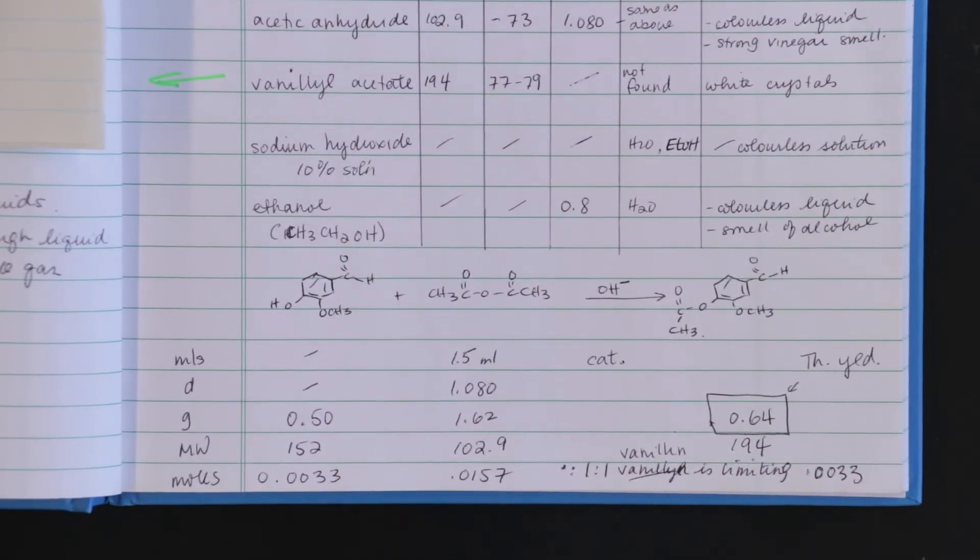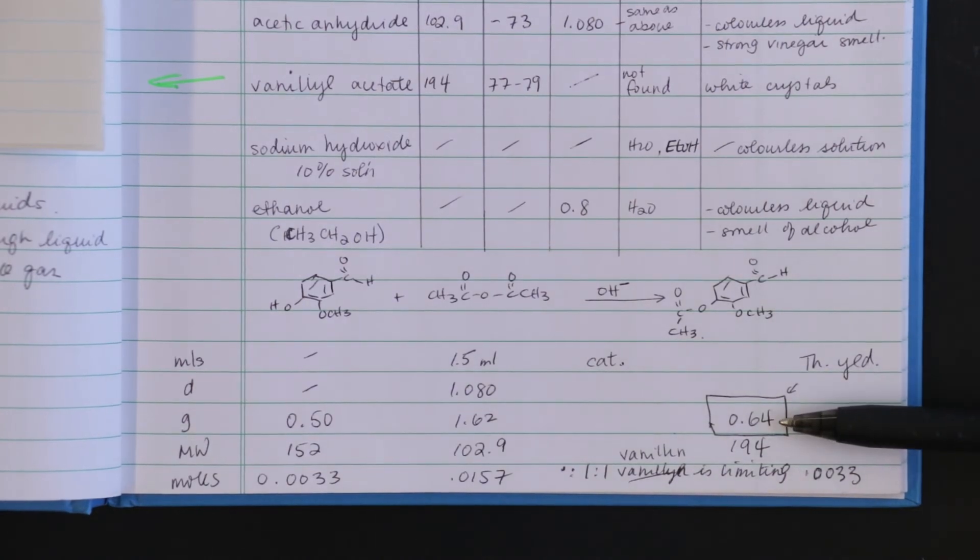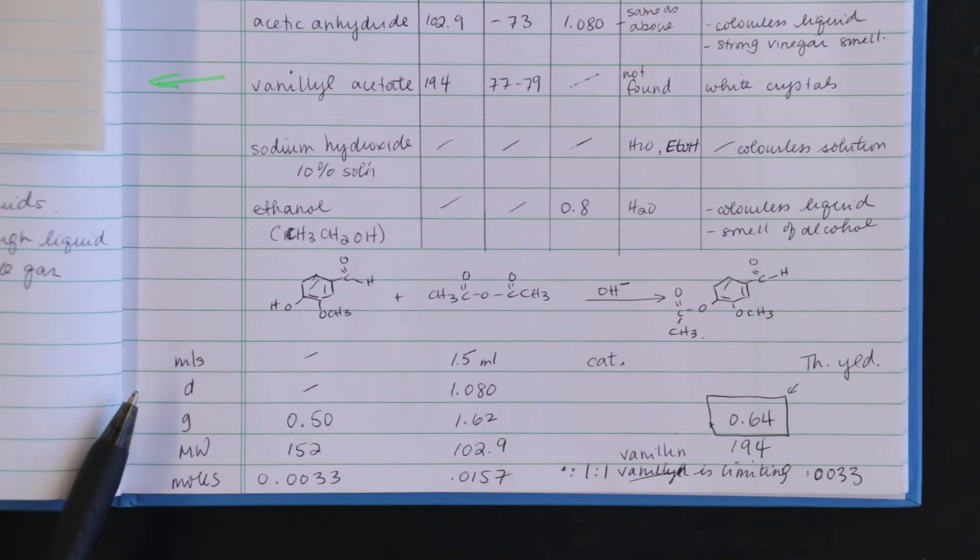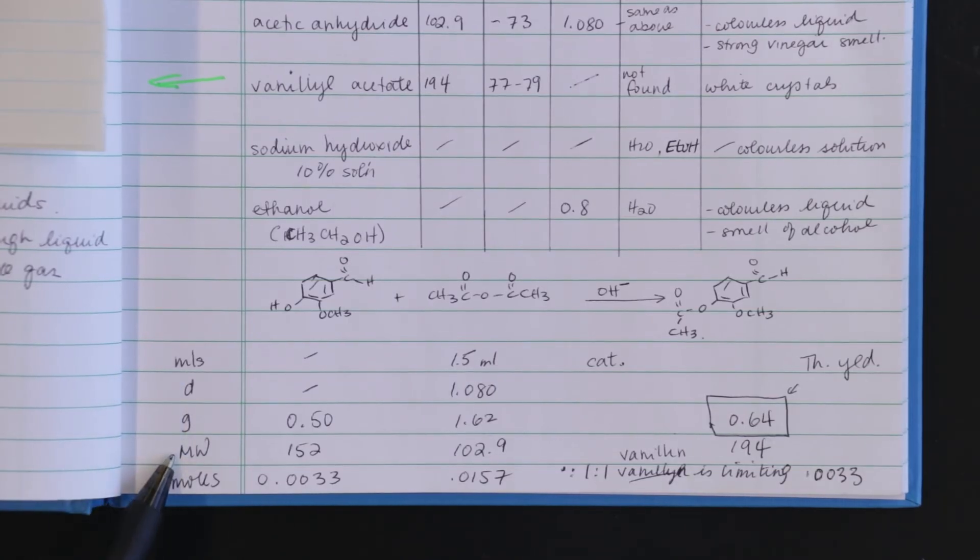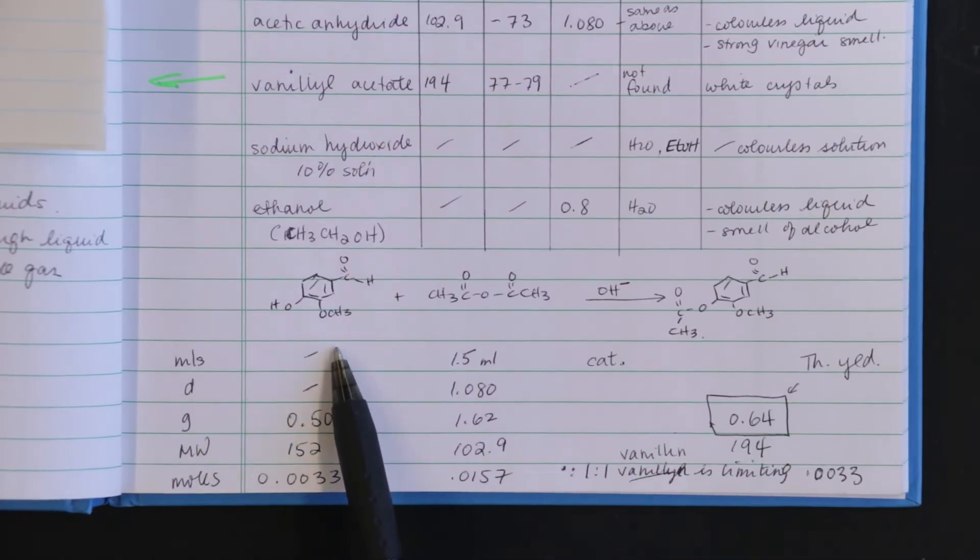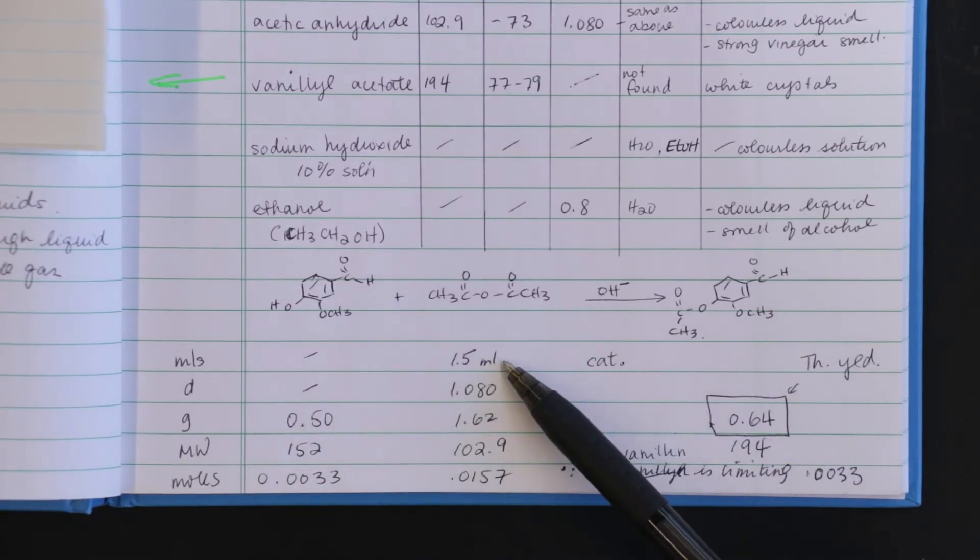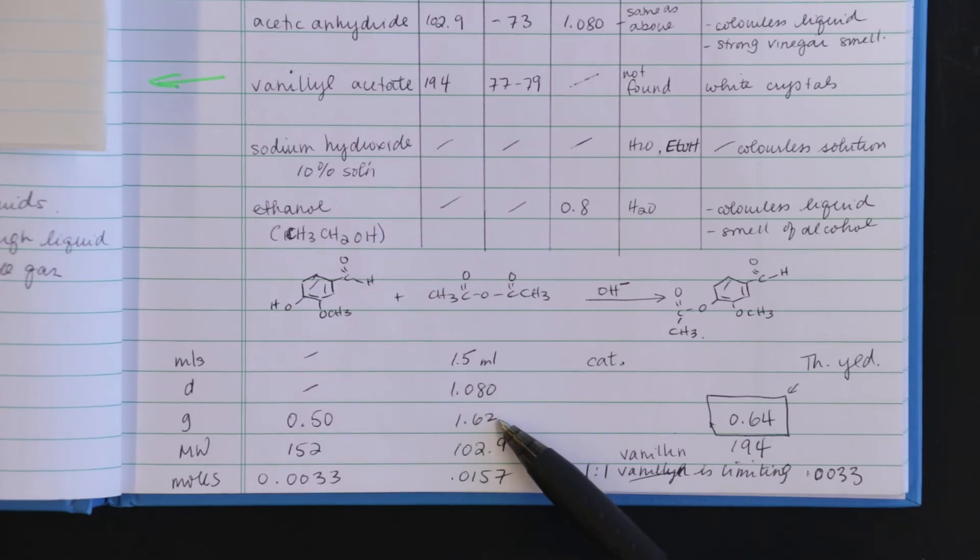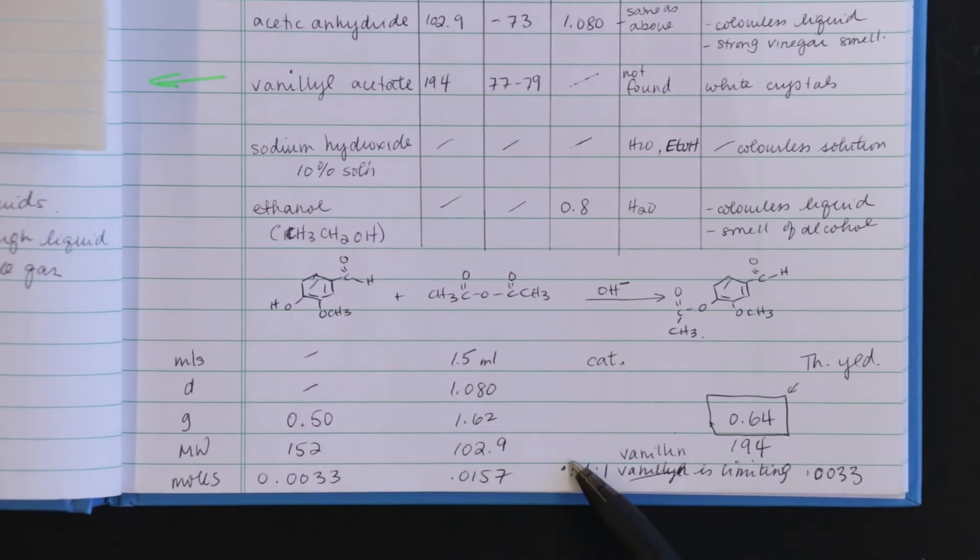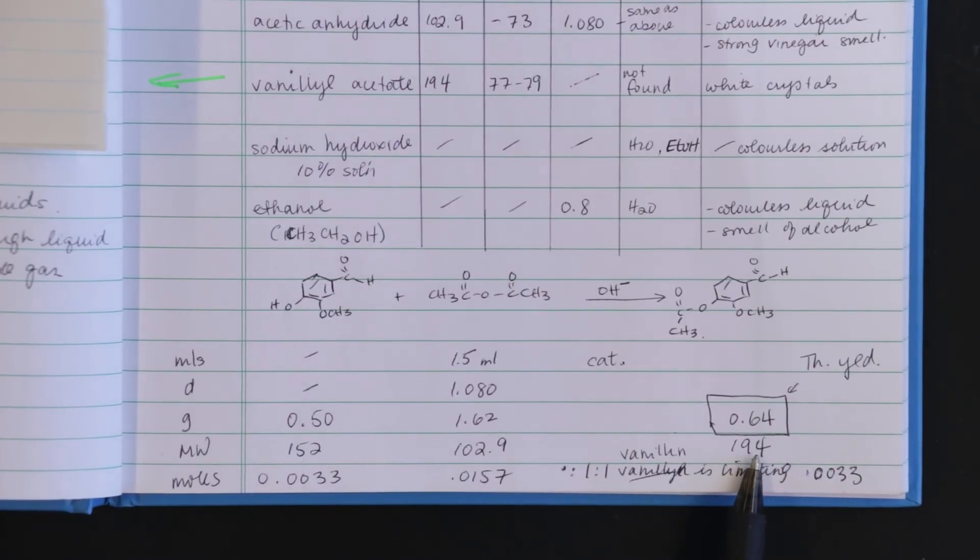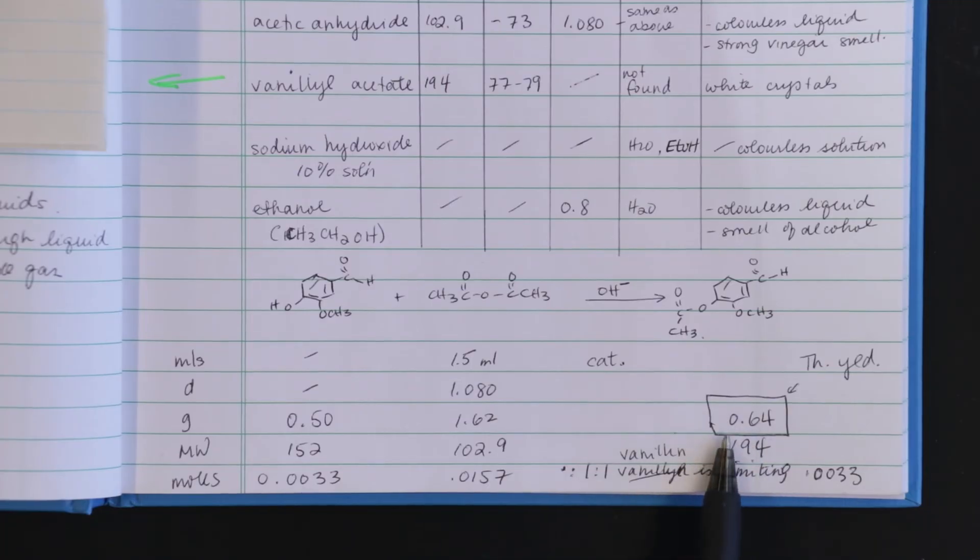When doing a synthesis I must do a theoretical yield calculation. This is how much product I am expecting if the reaction was a hundred percent successful. I have my equation and underneath I have my values. Mills, density, grams, molecular weight, and moles. The starting material is a solid so I don't need mills or density. I can go directly to the number of grams. The acetic anhydride is a liquid so I need mills, density, to calculate the number of grams and continue to moles. Because it is a one-to-one reaction this is a limiting number of moles. So this is the number of moles of product I can get. I know the molecular weight so I can calculate the theoretical yield and I put a box around it to make it obvious.